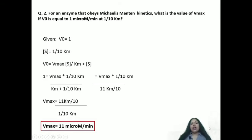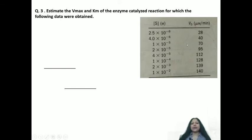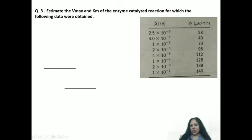Now coming to the third question, which is quite different from the previous two. In this question, a chart is given showing an enzyme kinetics experiment where you have changed the concentration of substrate in your vial and observed the initial velocity. For each substrate concentration, you observe a corresponding initial velocity. You are basically doing an enzyme kinetic reaction in a vial, and the data you obtain has been tabulated in the chart. From this, you need to calculate Vmax and Km.